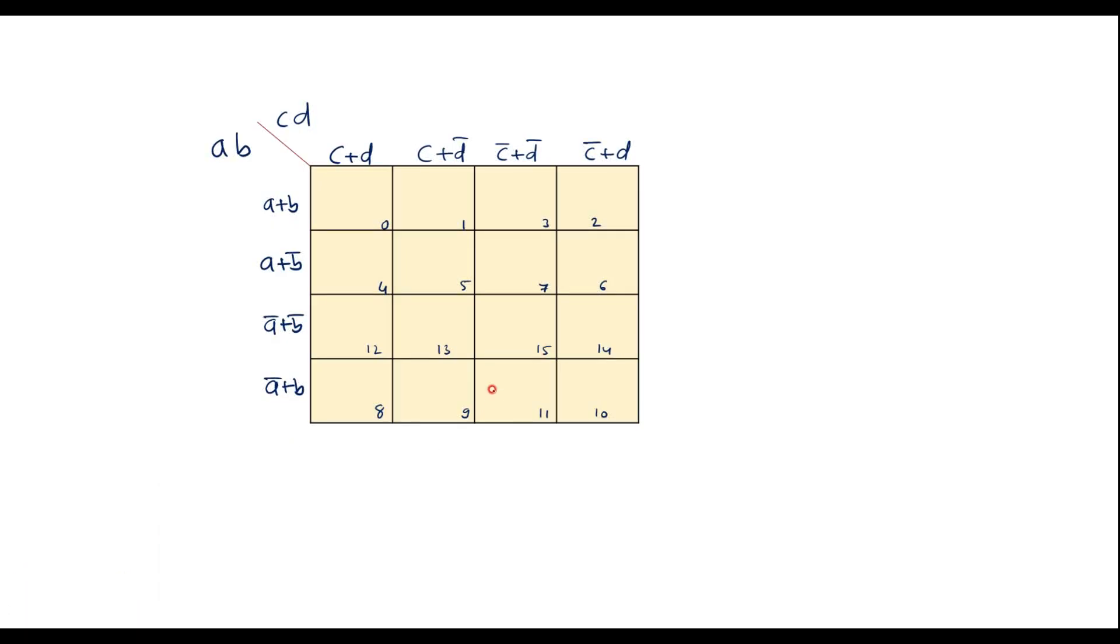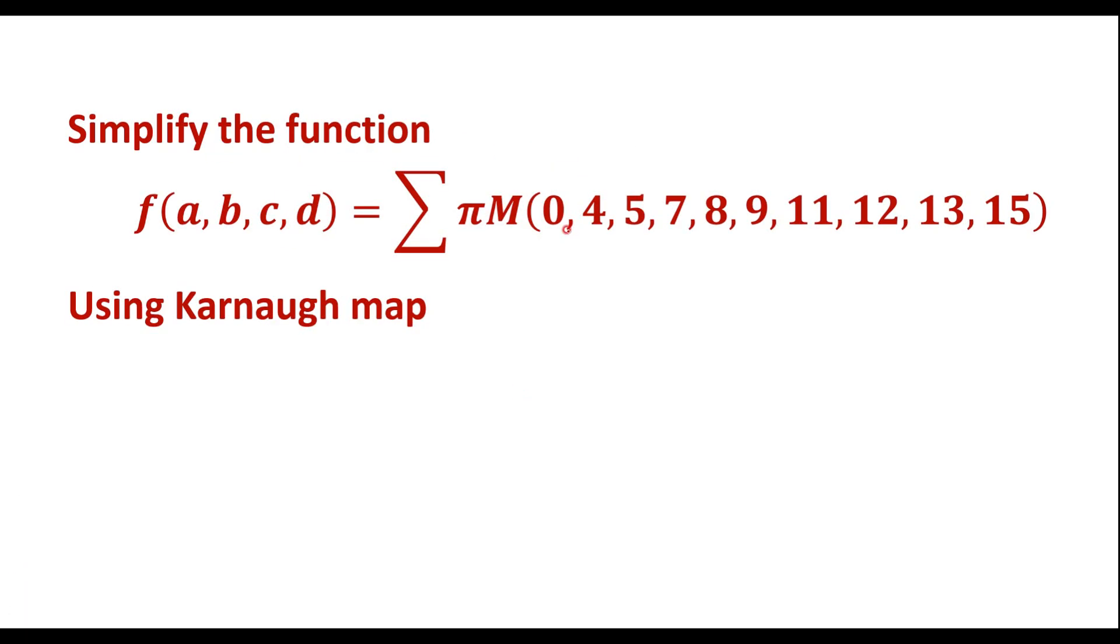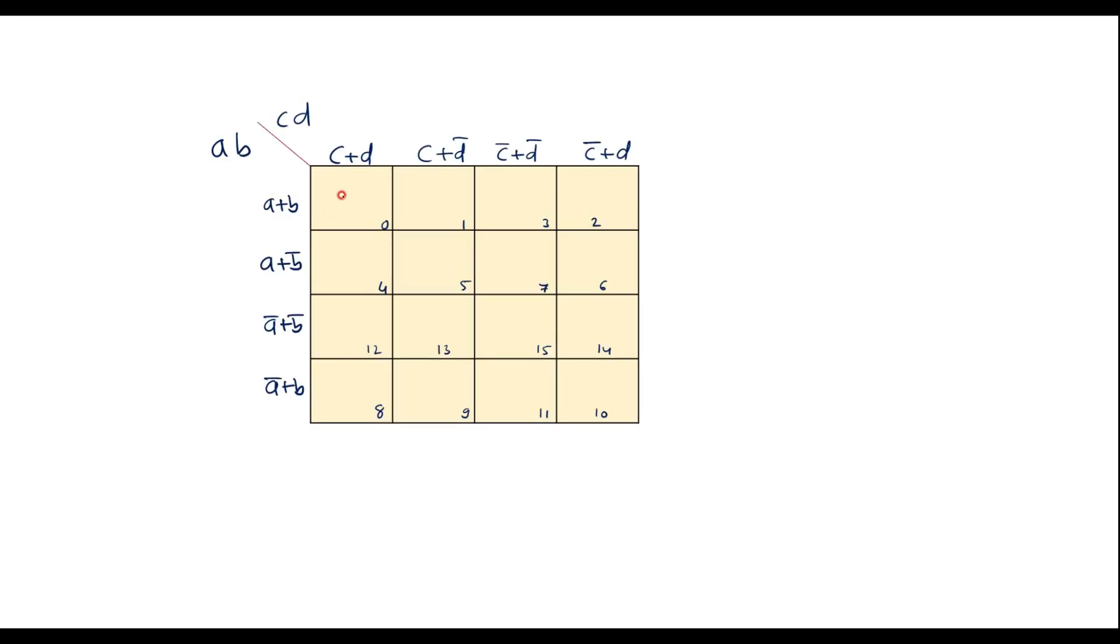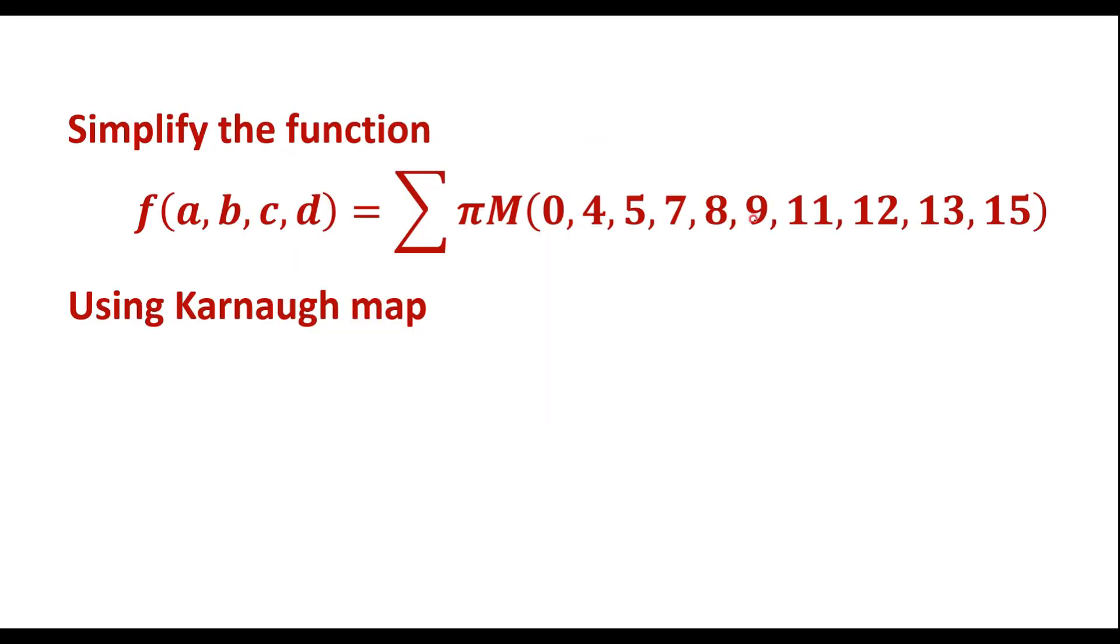So now let me write the maxterms values, that is 0, 4, 5. In these cells we have to write zeros because this is maxterm. So 0, 4, 5, cell number 5, then we have 7, 8, 9.